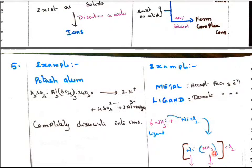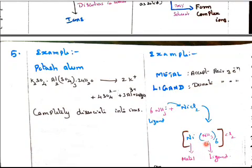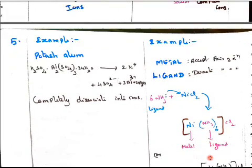So nickel and 6 NH3 and outside Cl2 in a square bracket. Nickel is called metal and NH3 is a ligand.